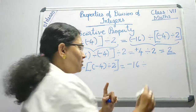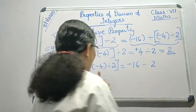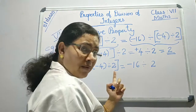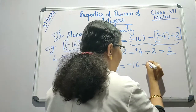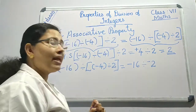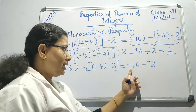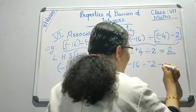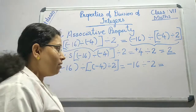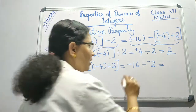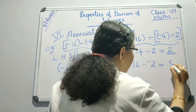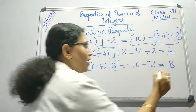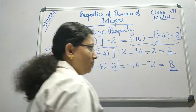4 by 2 is 2, and minus divided by plus gives minus. So we get minus 16 divided by minus 2. 16 divided by 2 is 8, and minus by minus gives plus, so the right hand side is 8.